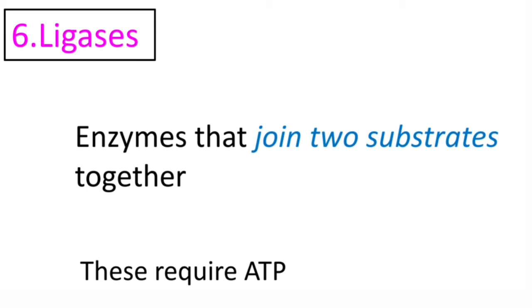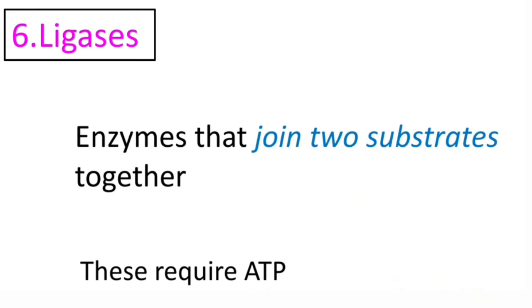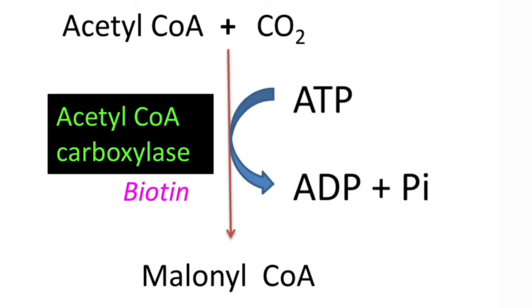Coming to the last class — ligases. Enzymes that join two substrates together are known as ligases. Hydrolases and lyases are responsible for breaking bonds, whereas ligases are involved in creating bonds. To join two substrates and create a bond, they require energy supplied by hydrolysis of ATP. An example is acetyl-CoA carboxylase, which joins acetyl-CoA and carbon dioxide to form malonyl-CoA, requiring energy from ATP hydrolysis to ADP and inorganic phosphate. This carboxylase requires biotin as a coenzyme.